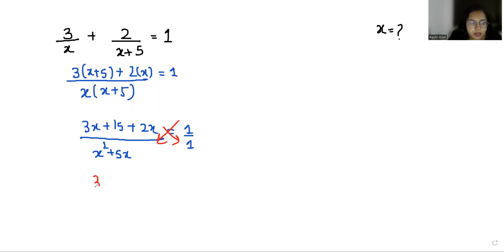So it becomes 3x + 15 + 2x equals x² + 5x. So x² + 5x. 3x + 2x is 5x and here it is positive, it comes in negative here. Negative 15 equals 0.